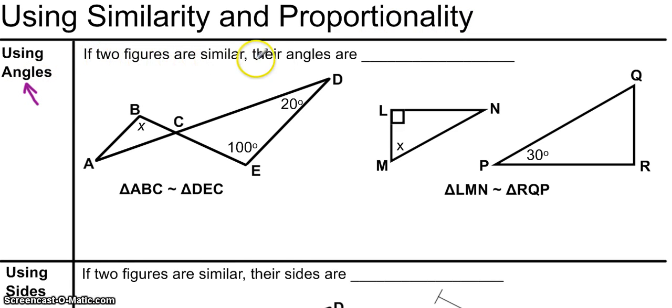If two figures are similar, their angles are congruent, meaning they have the same angle measure.